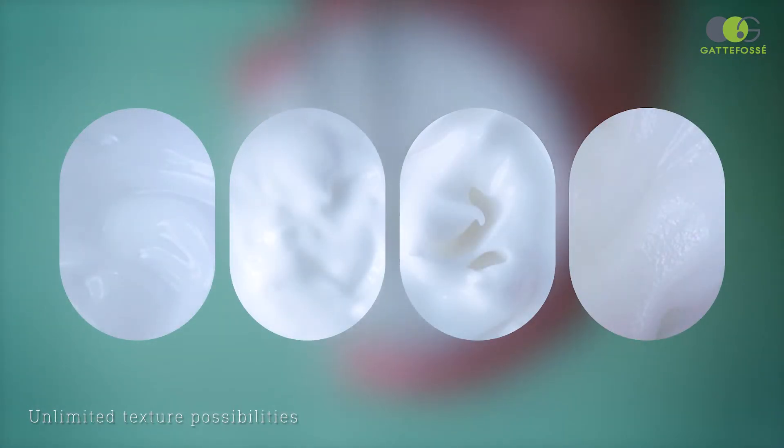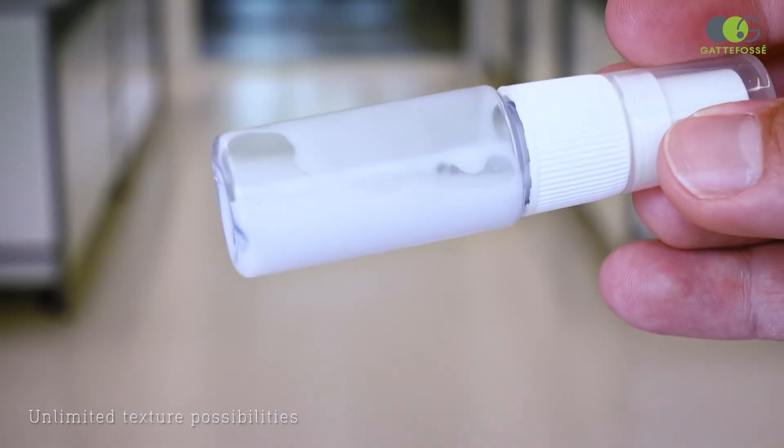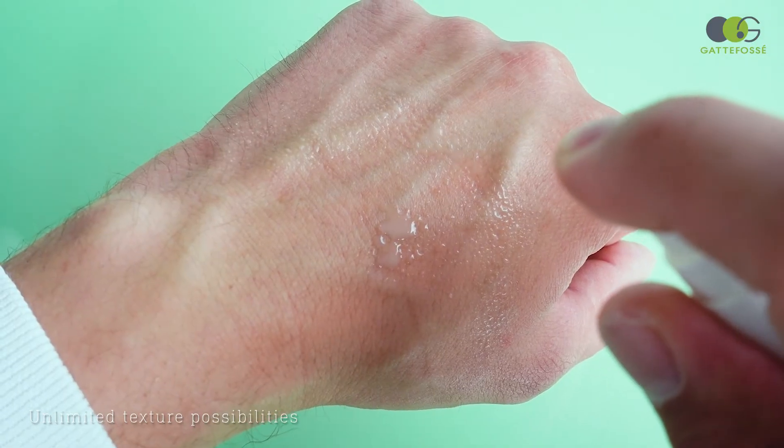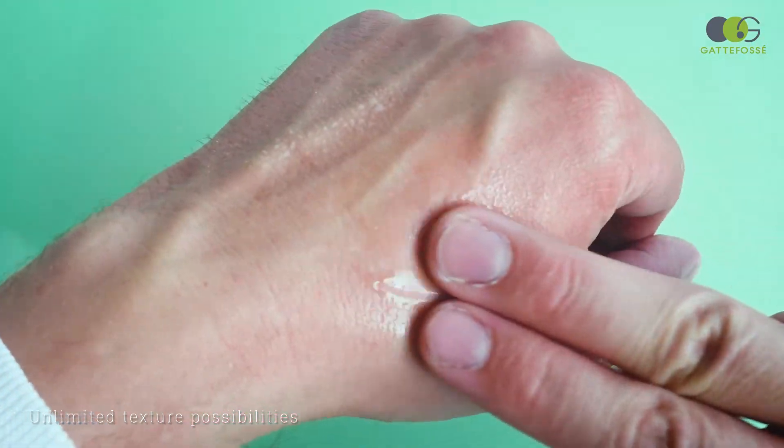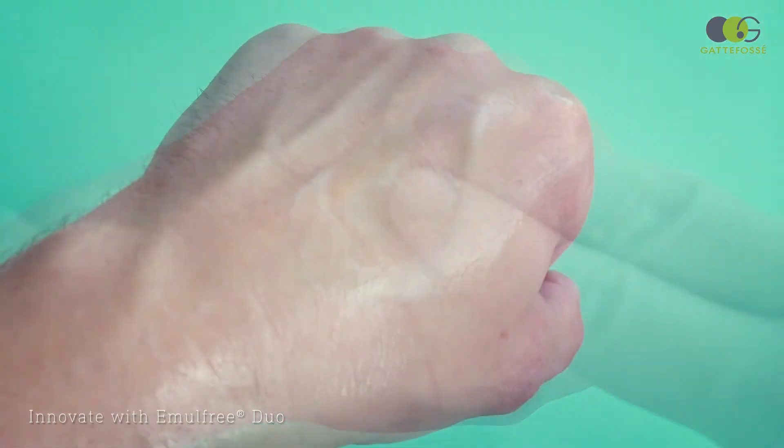Depending on the formulation, a wide range of textures can be achieved, from lotions to rich creams. Bi-gels obtained with ML-free Duo exhibit exciting textures with nice cooling sensation and high attractiveness.